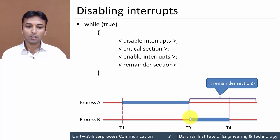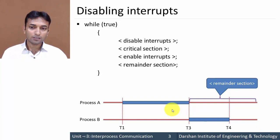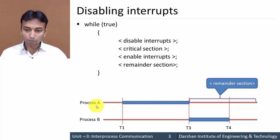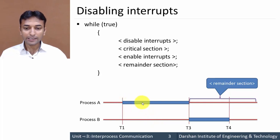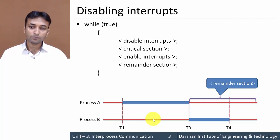For process B, at time t3 it will disable the interrupt, then the critical section runs from t3 to t4, and at the time of exit from the critical section it will again enable the interrupt. So: before entering the critical section a process disables the interrupt, and during exit it enables the interrupt. Once the interrupt is disabled, no other process can access that critical section. If process B tries to enter while process A already has the interrupt disabled, process B will not be able to disable the interrupt, so at any time only one process is in the critical section.